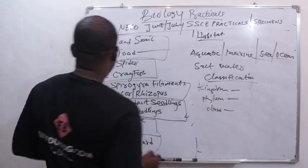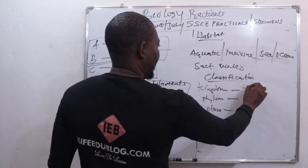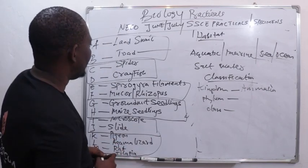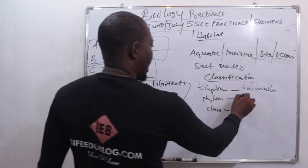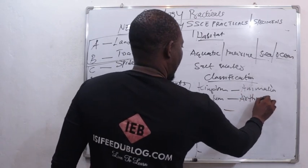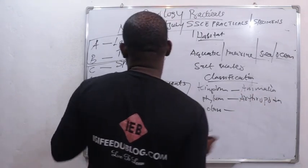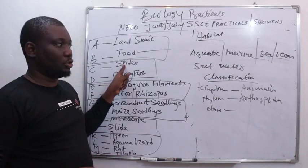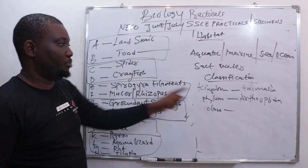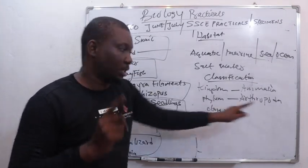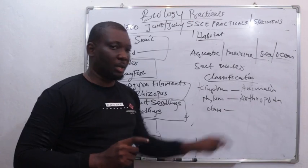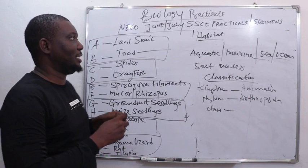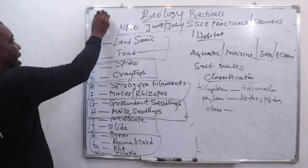For sea, it belongs to the kingdom Animalia. The phylum to which it belongs is Arthropoda. Sea is an arthropod because it has jointed legs or jointed appendages. The second reason it is an arthropod is because its external skeleton — the exoskeleton — is made up of a material called chitin.